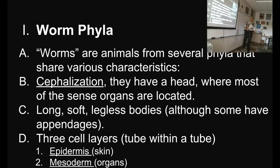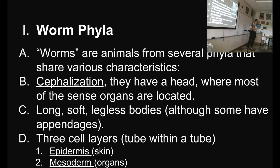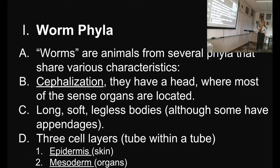Worms are animals from several phyla that share various characteristics. One of them is that they're cephalized. Cephalos is the Greek word for head, so being cephalized means they have a head. Sponges are acephalic. Cnidarians are acephalic — they do not have a head. But a worm has a head. They're the first of the groups we've talked about that have one. A head is usually the part of the critter that goes first into the world, and is usually where the sense organs are, and most of the time where the mouth is.